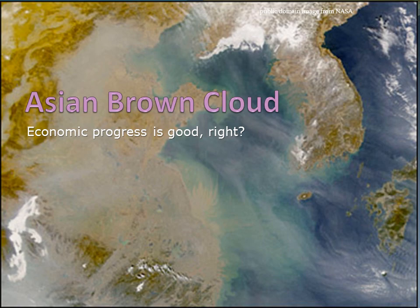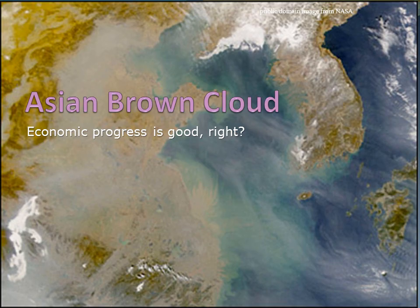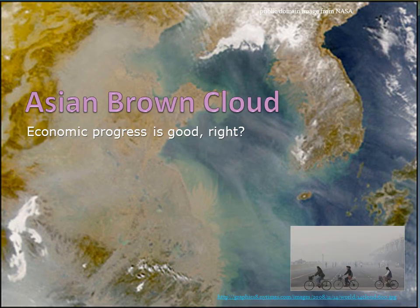Our first topic is Asian Brown Cloud. This is a satellite image of China near the Yellow Sea — you can see the Korean Peninsula over there — and it's hard to see the ground because of a very thick layer of air pollution called Asian Brown Cloud. And in case you're wondering if that air pollution is only high up in the sky, it's not. That other picture is a ground-level photo of people in Beijing, China, and as you can see, they can very much see that brown cloud — and they can't see much else.